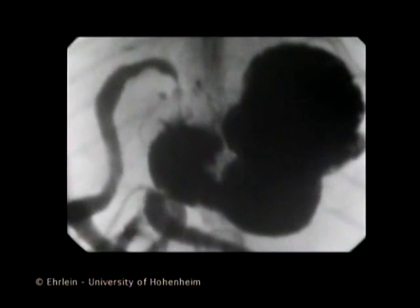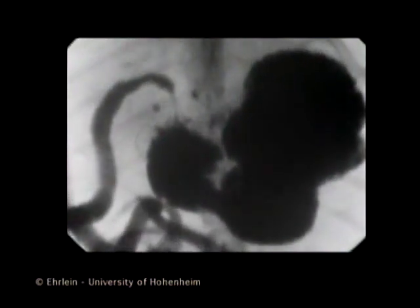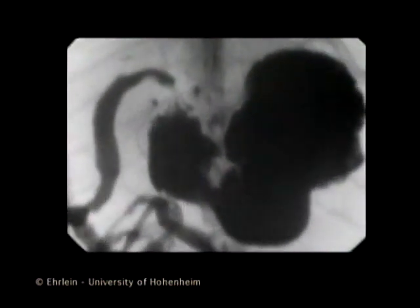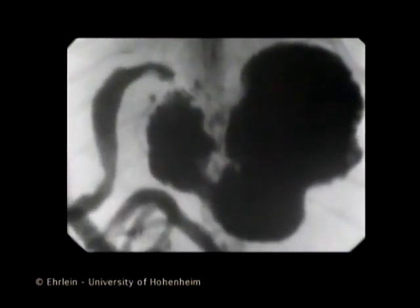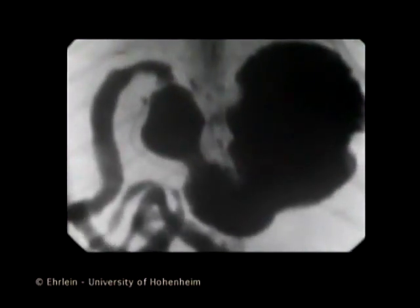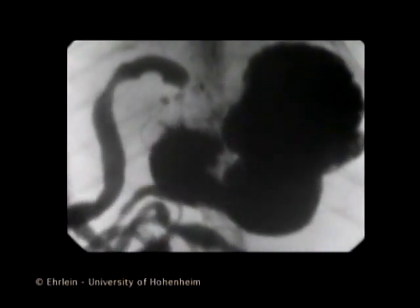Here, a peristaltic wave originates at the gastric body and propagates to the antrum. Reaching the antrum, the subsequent wave starts at the gastric body.